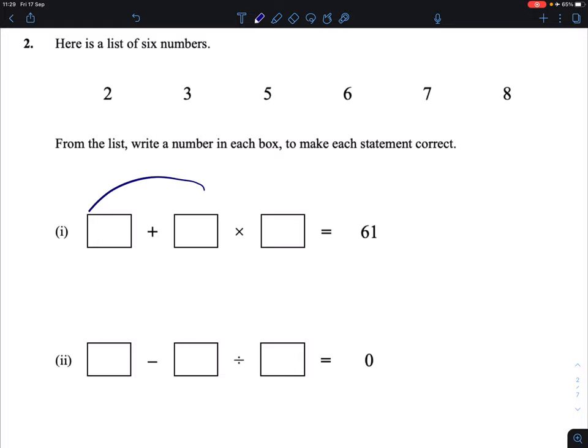From that list we have to write a number in each of the 6 boxes below to make each statement correct. In the first one we have two boxes with a plus sign between them and another two boxes with a multiply sign between them. The answer is to be 61.